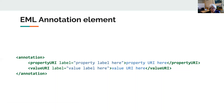The latest version of EML came out about a few months ago — it was September. One of the features that is supported now is semantic annotation. This is the basic structure of an EML annotation. It's pretty simple, has only two child elements, and both are required. I'll show you some examples of where these go.